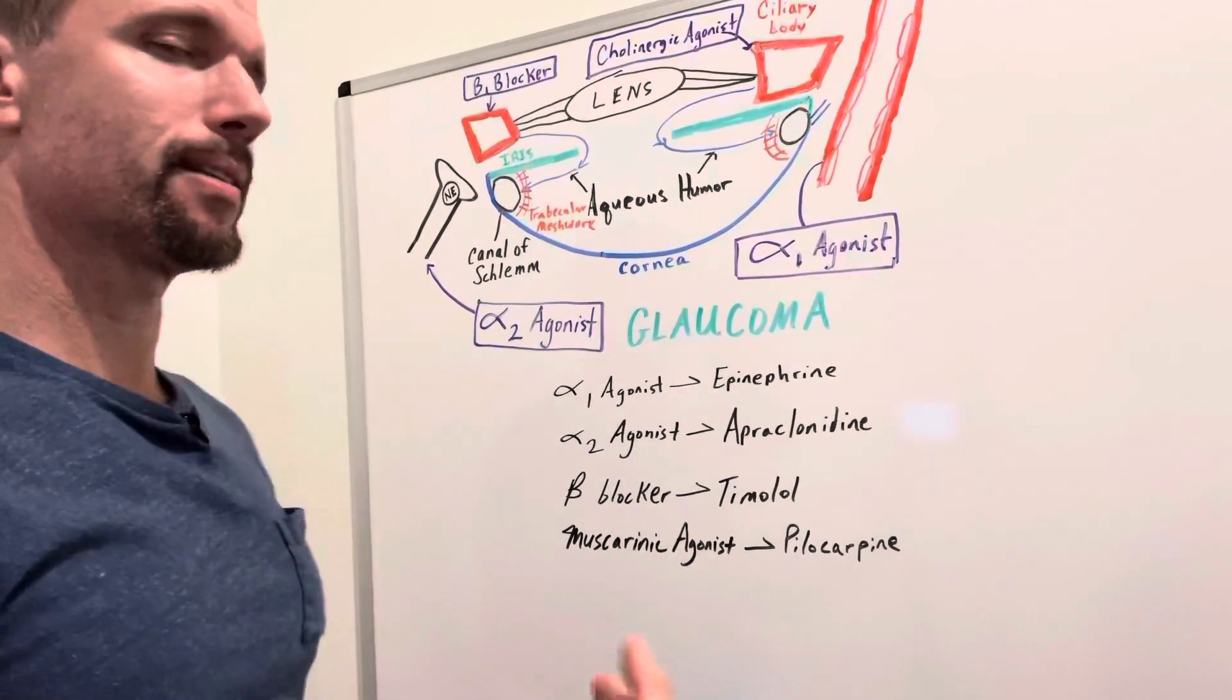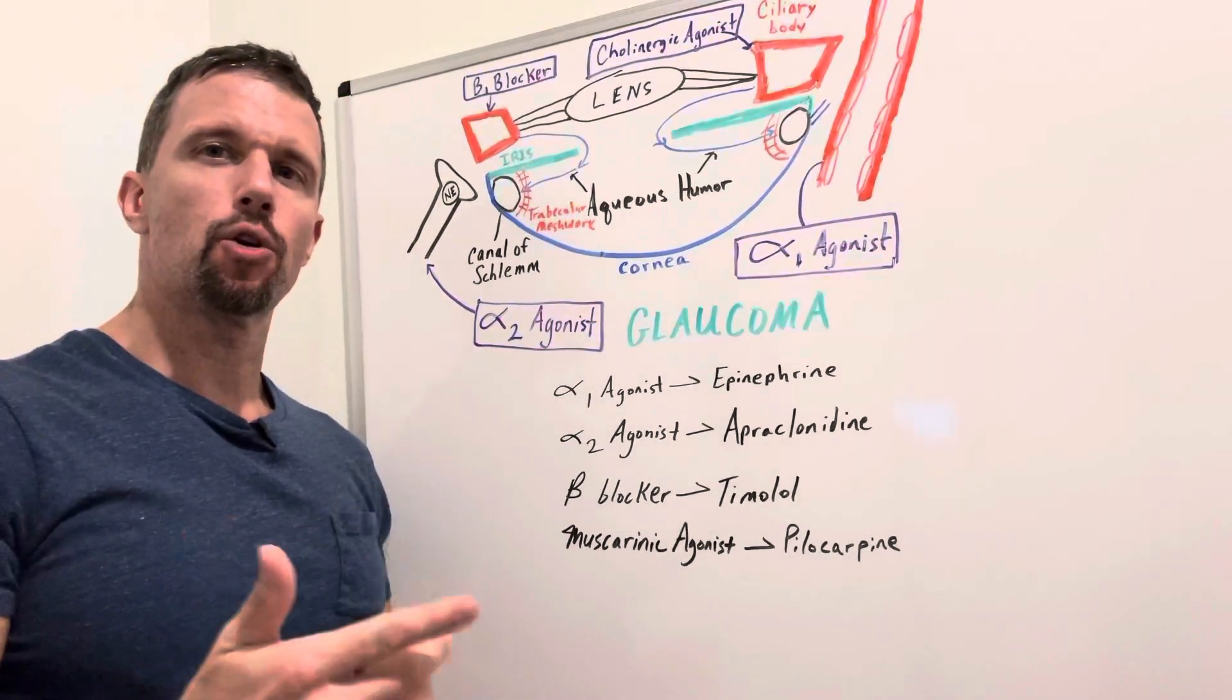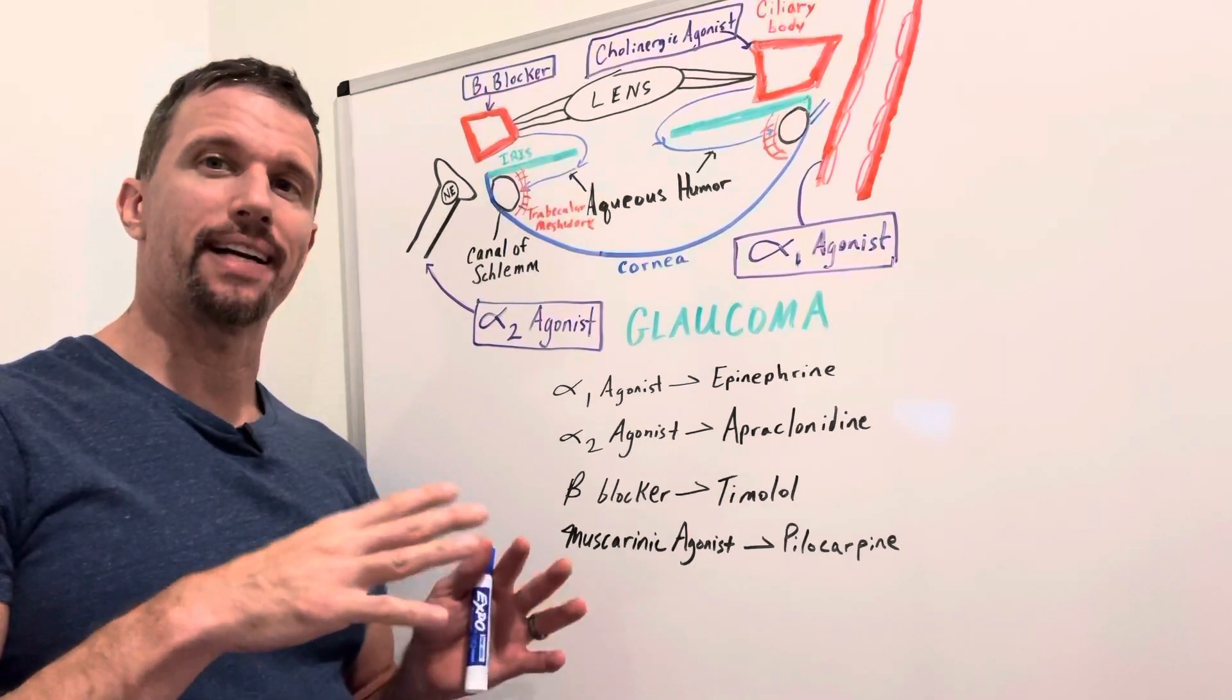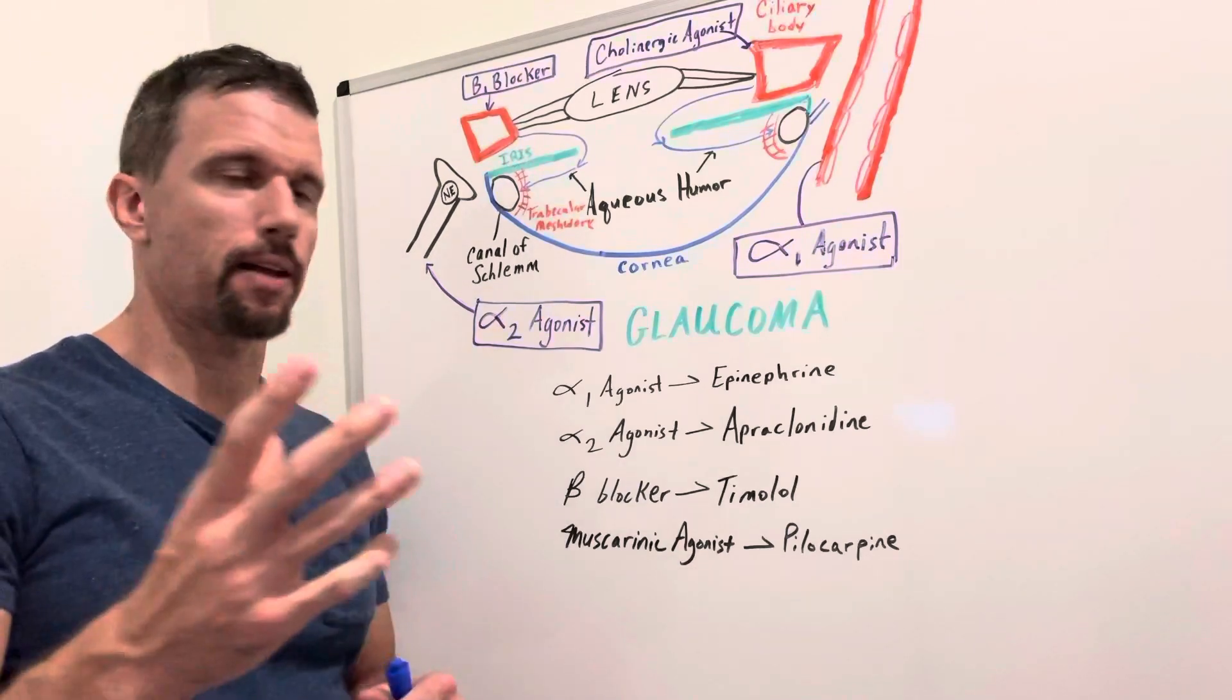And then alpha-2 agonists. So you have to remember with alpha-2 adrenergic receptors, those actually are anti-sympathetic. So here's how they work.